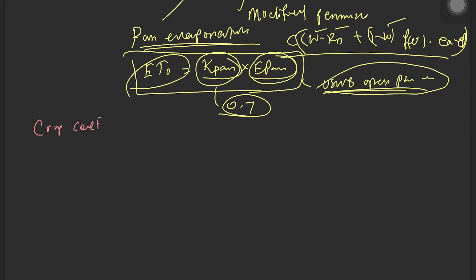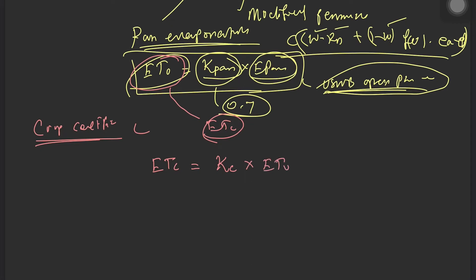Now, what is crop coefficient and where is it used? Crop coefficient is used to convert ET₀ into ET crop. The formula is: ET crop = Kc × ET₀. We assess ET₀ using the formulas mentioned — pan evaporation, modified Penman method, radiation method — and then multiplying by the crop coefficient gives us ET crop, the crop evapotranspiration.